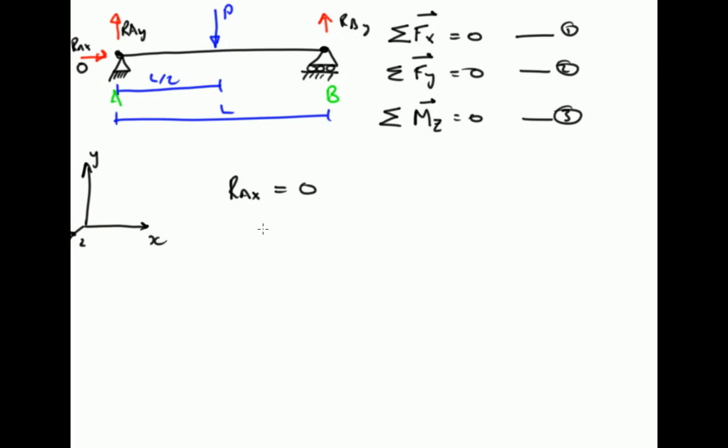Moving on to equation 2, the sum of forces in the y direction must equal 0. If we take upwards as being positive, we have R_Ay plus R_By, so that's the reaction at B. And because P is acting downwards, we say it's negative, so minus P equals 0.